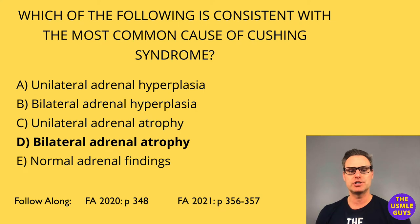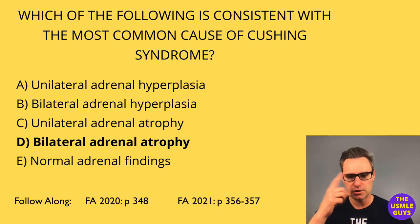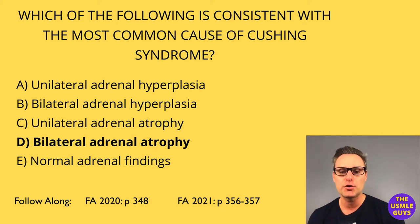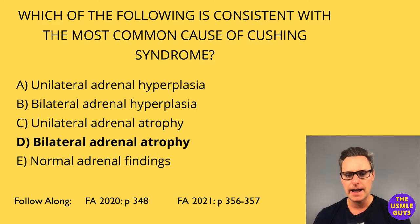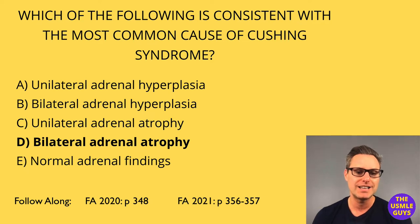So let's say we suspect Cushing syndrome — how do we make our diagnosis? To screen, we can check free cortisol via urinalysis, which will demonstrate an increase in free cortisol. We can also check late night salivary cortisol, which would also be high. And we have the dexamethasone suppression test — if Cushing syndrome is present, that overnight low-dose dexamethasone suppression test will not cause suppression.